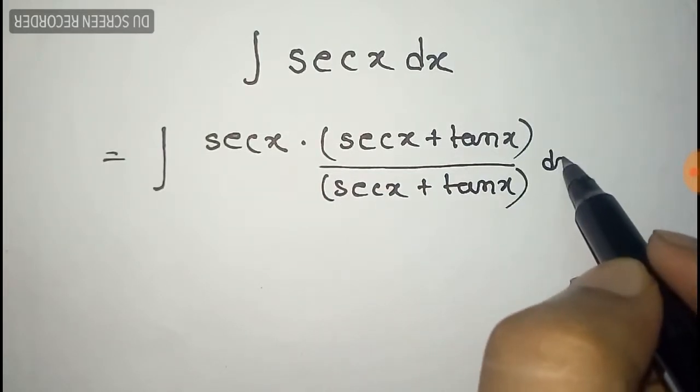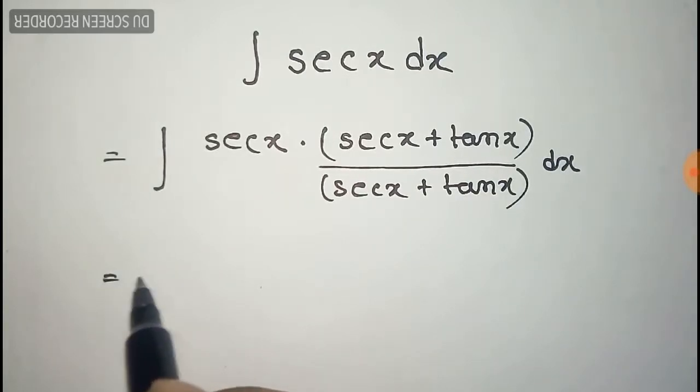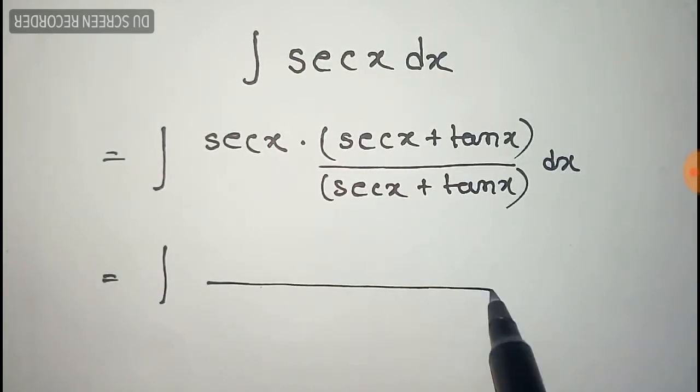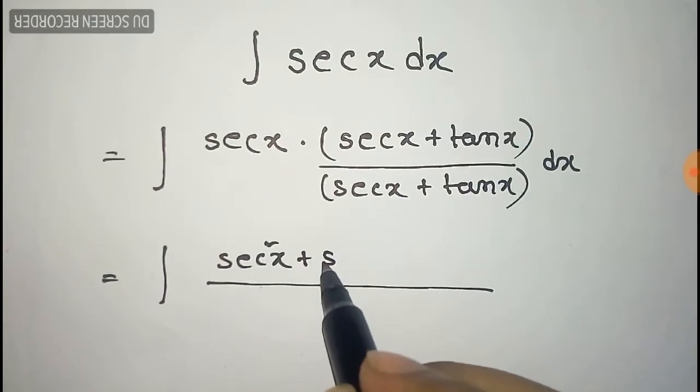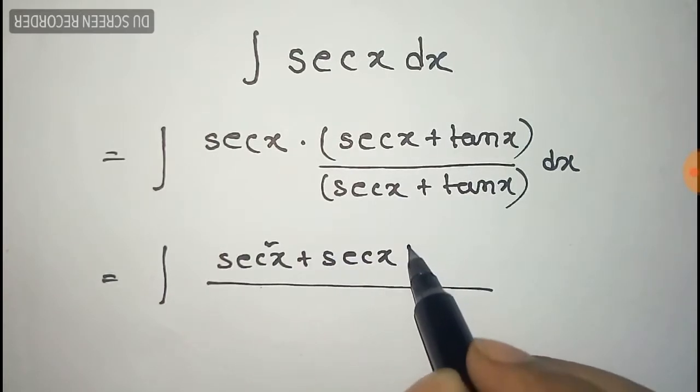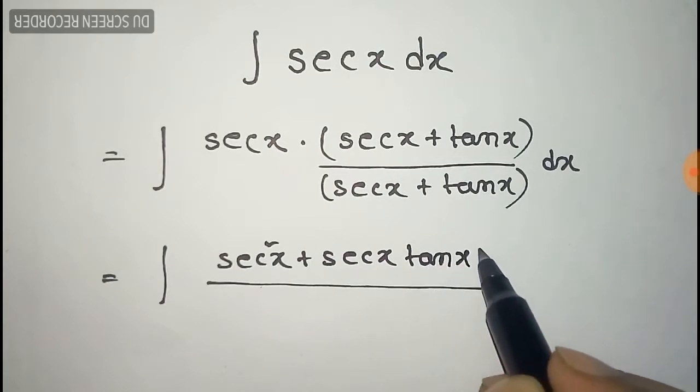It will be the same, so after this we multiply sec x with sec x plus tan x. So it becomes sec square x plus sec x tan x.